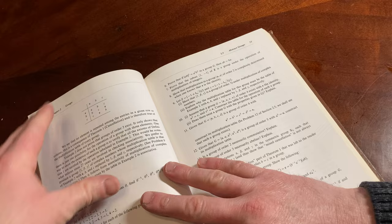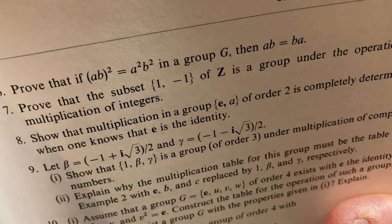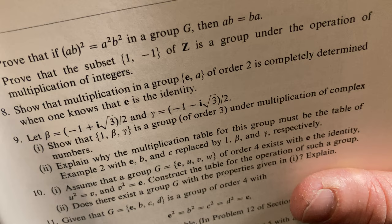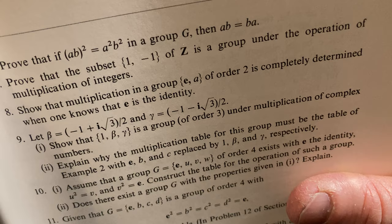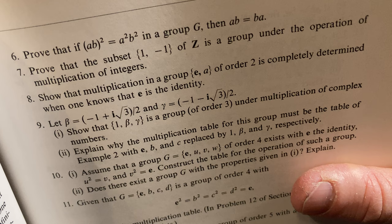So what's this? Oh here's some little proofs. Here's an easy proof. Number six is pretty easy. Prove that if (AB)^2 = A^2 B^2 in a group G, then AB = BA. Right, that's pretty cool. Prove that the subset {1, -1} of Z is a group under the operation of multiplication of integers. Yeah, that's pretty easy too. You can go through that one. It's only two elements, right, so you can go through all of the properties of what it means to be a group. Right, show there's an identity.